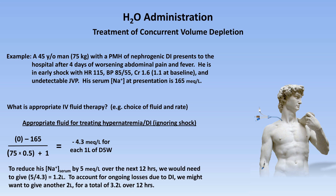So to reduce his serum sodium by 5 over the next 12 hours, we would need to give 1.2 liters of fluid during that time. To account for ongoing losses due to his DI, we might want to give another 2 liters for a total of 3.2 liters — that additional 2 liters is an estimate we could make by talking to the patient about how much fluid he typically consumes in a 24-hour period. Most patients with DI will have a rough estimate or even exact idea of this value. Taking 3,200 mL divided by 12 hours gives us 267 mL per hour of D5W. The fact that this rate is so close to the previous case is just coincidence.